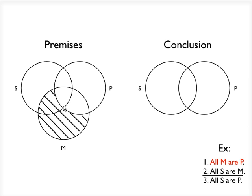So anything that is an M is also in the P category. Another way of saying that is that there's nothing that is an M that is not also a P.